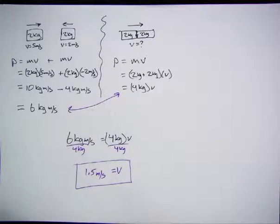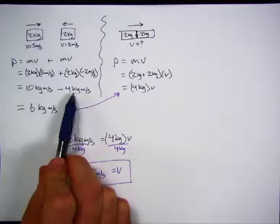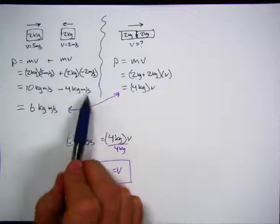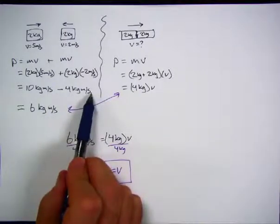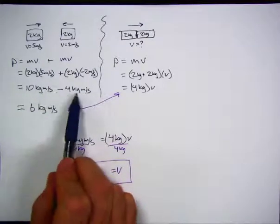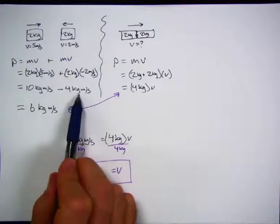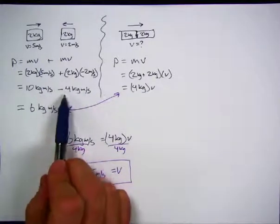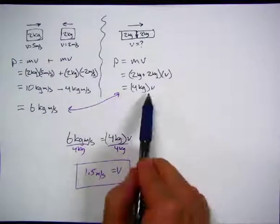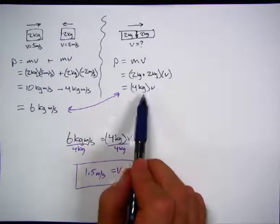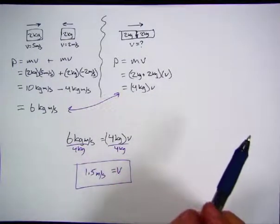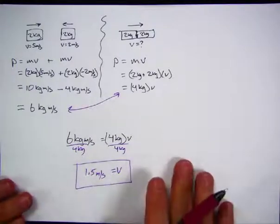Before the collision we had 10 kilogram meters per second for the first car and negative 4 for the second. I might wonder: what if both cars had equal and opposite momentum — say, 10 and negative 10 kilogram meters per second? The total would be zero, and after the collision we'd expect the stuck-together carts to stop. Those are situations we can actually try.